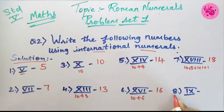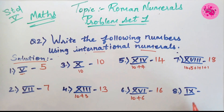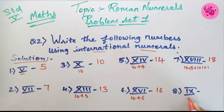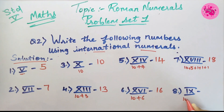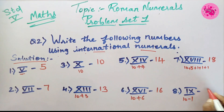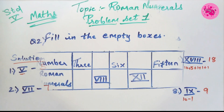Number 8: The Roman numerals I and X are given. Here I is written before X, so that means 10 minus 1, and we get the answer 9.